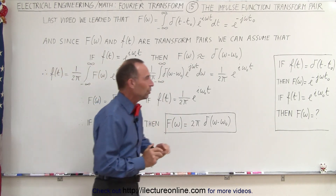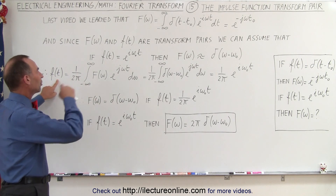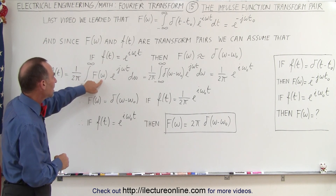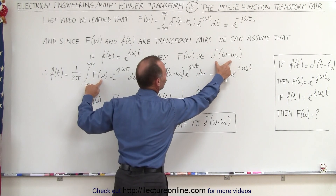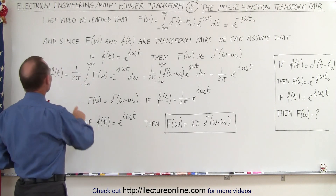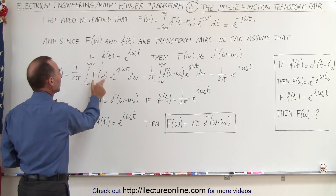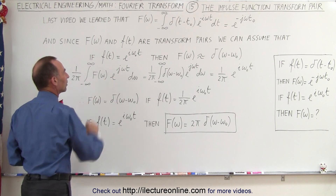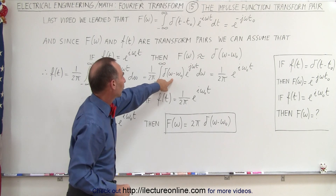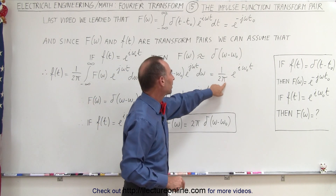Stick with me for a moment. Now we're going to find the solution when we have this as an input function. We're going to reverse ourselves and take the inverse transform — find the function in the time domain by plugging in the assumed solution. The inverse Fourier transform is 1 over 2π times the integral from minus infinity to infinity of the Fourier transform in the frequency domain times e^(jωt). When we plug in the delta function as the assumed solution, we get 1 over 2π times e^(iω₀t).